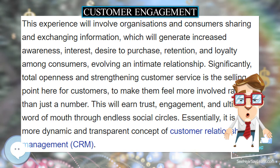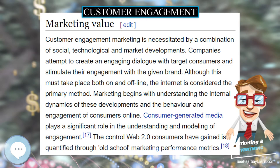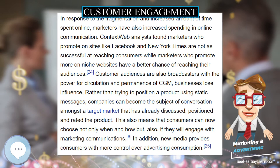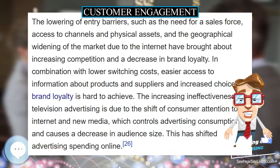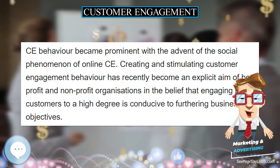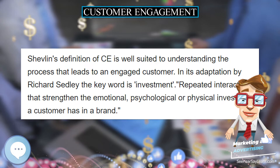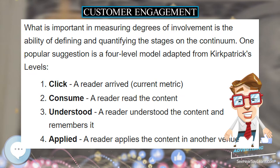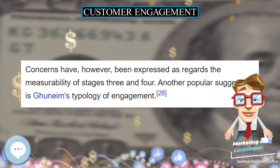Consumer-generated media plays a significant role in the understanding and modeling of engagement. The control Web 2.0 consumers have gained is quantified through old-school marketing performance metrics. The effectiveness of the traditional interrupt-and-repeat model of advertising is decreasing, which has caused businesses to lose control of communications agendas. In August 2006, McKinsey & Company published a report indicating that traditional TV advertising would decrease in effectiveness compared to previous decades. As customer audiences have become smaller and more specialized, the fragmentation of media audiences has reduced the effectiveness of the traditional top-down, mass, interrupt-and-repeat advertising model.